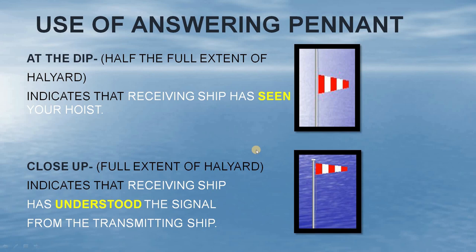So when the receiving ship has seen your signal, they will hoist the answering pennant at the dip. When the receiving ship has understood or decoded your signal, they will hoist the answering pennant at close up. Finally, once they are ready with their response, they will lower their answering pennant and respond with their own hoist of flags.